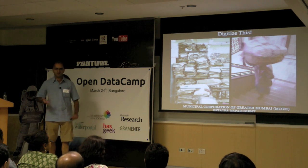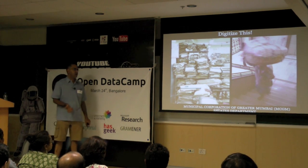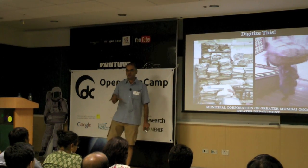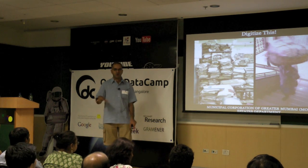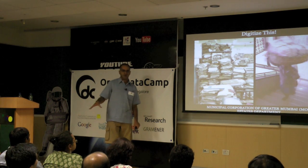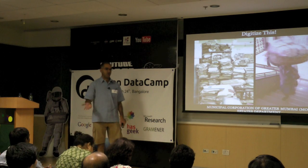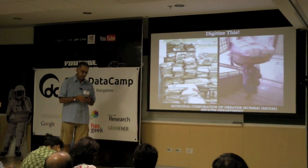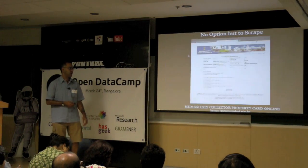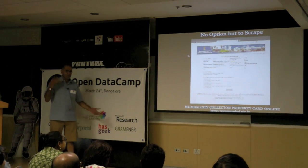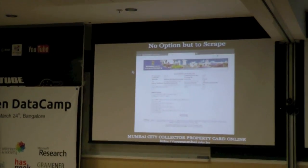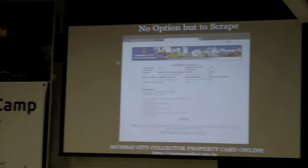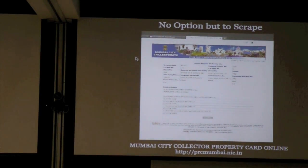I happened to be lucky to be working in the municipal corporation at a time when these new record rooms are actually being set up, so I get access to all sorts of wonderful data. Most data about cities is also about space — it can be mapped. I'm going to run through some of my own experiences dealing with a few different types of databases: some from the municipal corporation having to do with property, some from the collector's office dealing with land, and transport data from the BST — the Bombay Bus Company — and a project I've been running called Chalo Best.